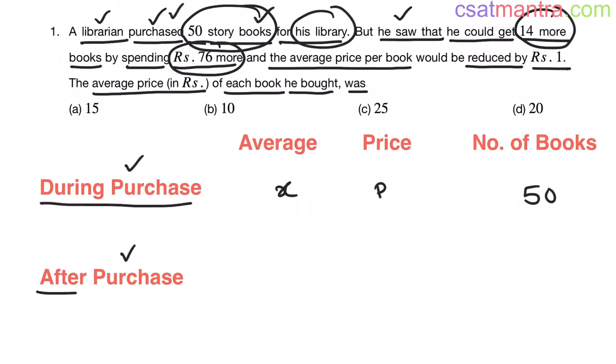Now, second case is after purchase. After purchase, he saw that he could get 14 more books. So, total number of books would be 50 plus 14, that is equal 64. He could get 14 more books by spending 76 rupees more. Now, the price would be P plus 76. Now, in this case, average price per book would be reduced by 1 rupee. So, average is X minus 1.